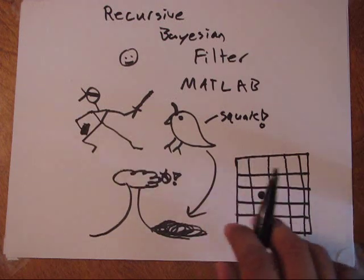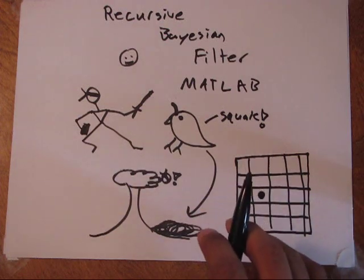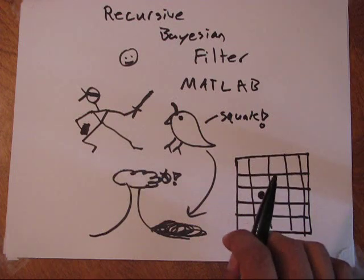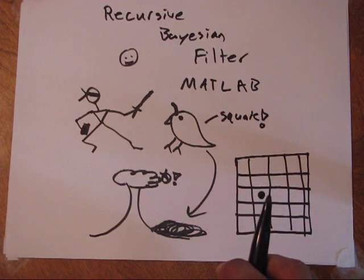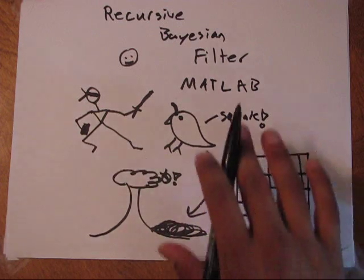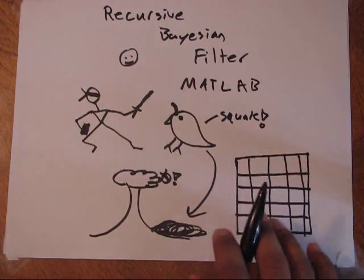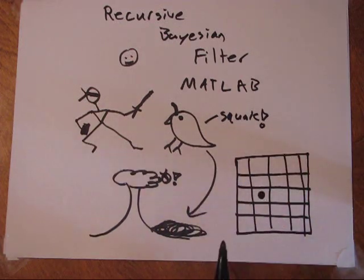And because of this error, because of this noise from where the quail is squawking, of where he might be, the ninja needs to iteratively update an estimate about where he thinks the quail is. And so we're going to look at that as an example. I'll go through a couple of nuances to the formalization, and then we'll do it in MATLAB.